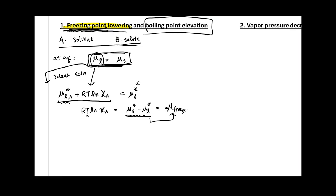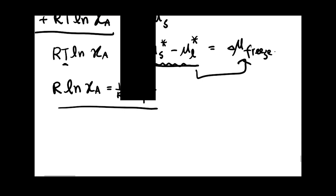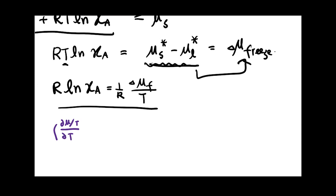Moving temperature to the right-hand side gives the form we want. The reason is that we previously introduced the Gibbs-Helmholtz equation: partial(mu/T)/partial T equals negative delta H over T squared. We want this form because when talking about phase transitions, people typically give you delta H of freezing, not delta G of freezing.